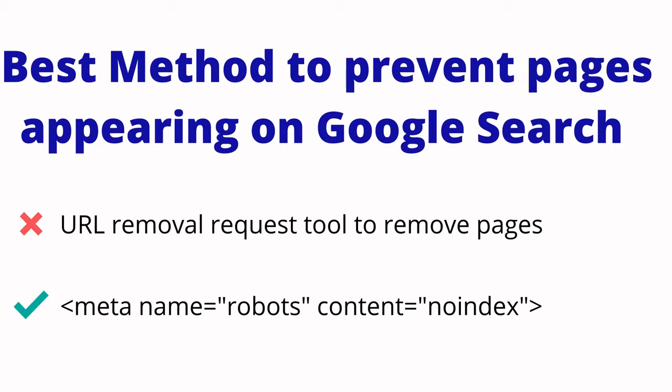The URL removal tool is a temporary option, but the permanent solution is either using meta name robots noindex, or you can remove the content and set a 410 or 404 status code. The next issue is blocked by robots.txt.